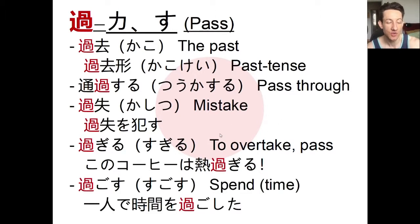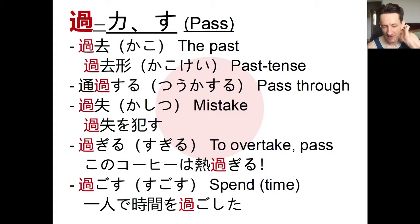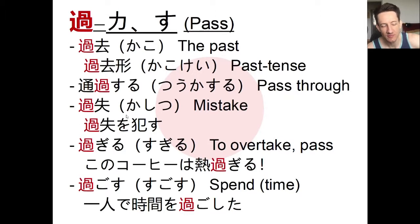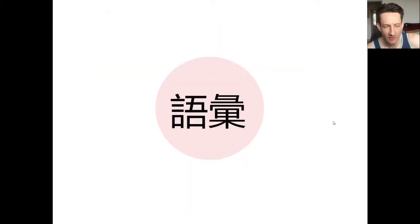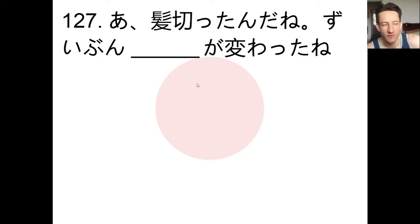Finally we have 過ごす — time is passing by, so we can say 一人で時間を過ごした, I spent time by myself. A lot of interesting words with this character, so be sure to remember some of them — good phrases like 過失を犯す, for example. Anyway, moving on — now we'll take a look at our vocabulary.